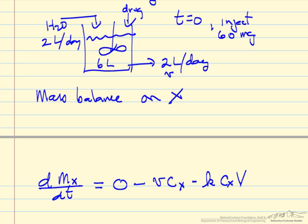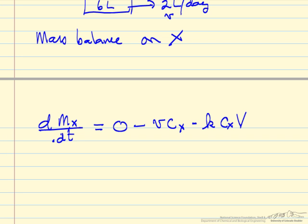The mass can be written as volume times concentration. Volume is constant, concentration is changing with time, and this equals minus the volumetric flow rate plus rate constant times concentration.